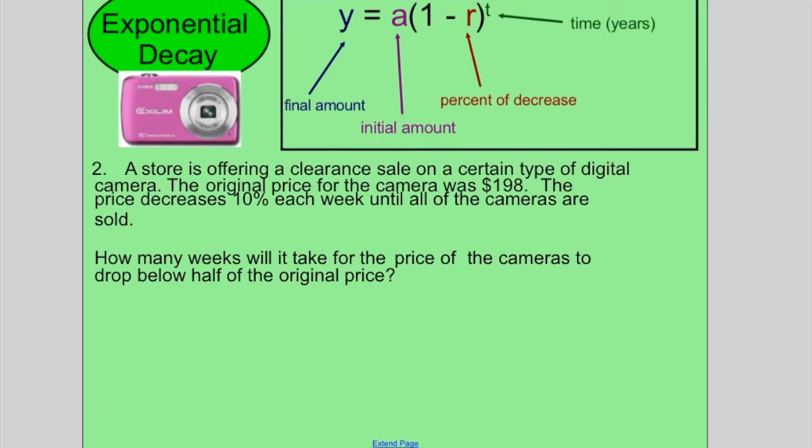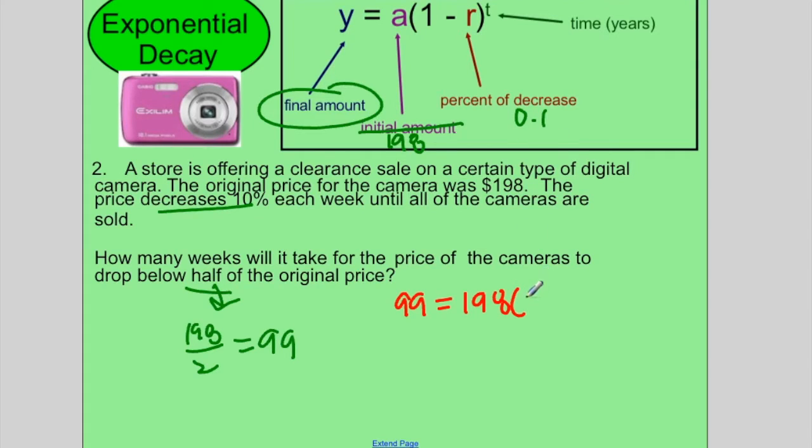That's example one. Let's look at example two. A store is offering a clearance sale on a certain type of digital camera. The original price for the camera was $198. So our initial amount is $198. The price decreases by 10%, so that's our 0.1, each week until all of the cameras are sold. How many weeks will it take for the price of the cameras to drop below half of the original price? So our original price currently is $198. To figure out half the price, we take $198 divided by 2, which is $99, which is our final amount. So we're going to plug it in. So we have 99 equals $198 times 1 minus 0.1 to the t, we don't know how much time.